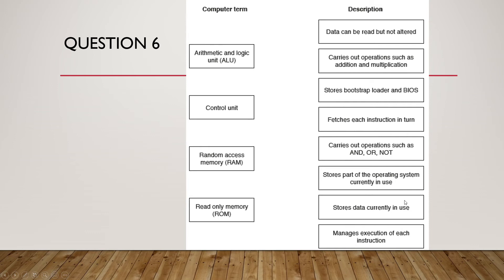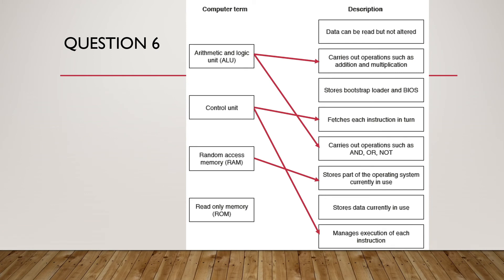Question number 6: Four computer terms and eight descriptions are shown. Draw lines to connect each term to the correct description. ALU: carries out operations such as addition and multiplication, and carries out logical operations such as AND, OR, NOT. Control unit: fetches each instruction in turn and manages execution of each instruction. RAM: stores the part of the operating system in use and stores data currently in use. ROM: stores the bootstrap loader and BIOS.